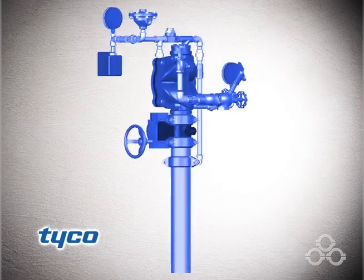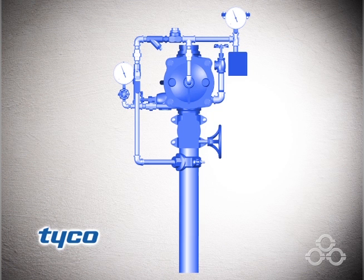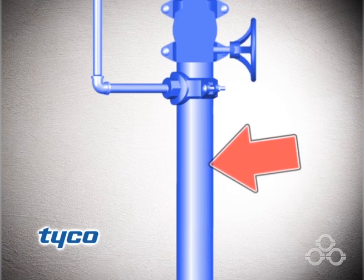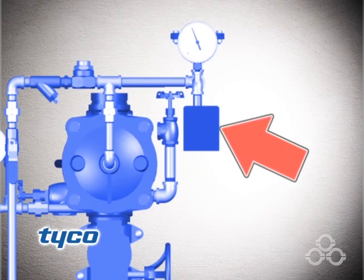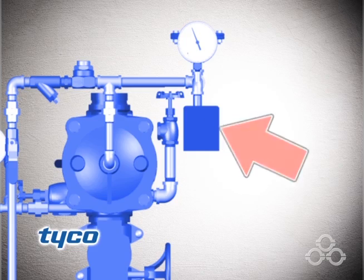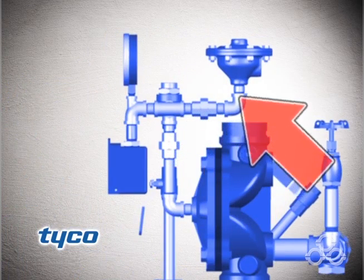The system supply contains water under pressure, shown here in blue. In the set condition, water supply pressure is applied to the DV-5 waterway inlet, the DV-5 diaphragm chamber, the Model MC-1 manual control station, and inlet of the Model DP-1 Dry Pilot Actuator.